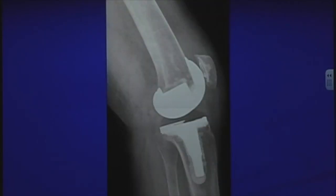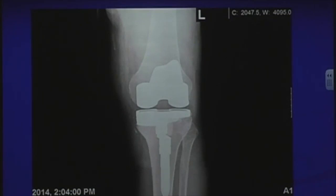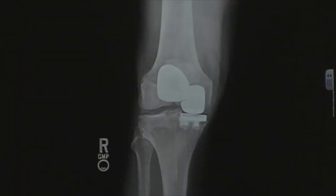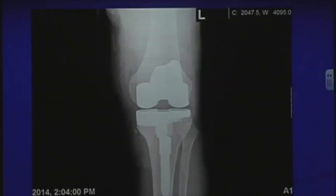Sometimes when converting from a partial to a total knee there is some bone loss from removing the implant. This patient required a wedge on the medial side to make up for that bone loss. When I use a wedge I also typically use a stem to further augment fixation.